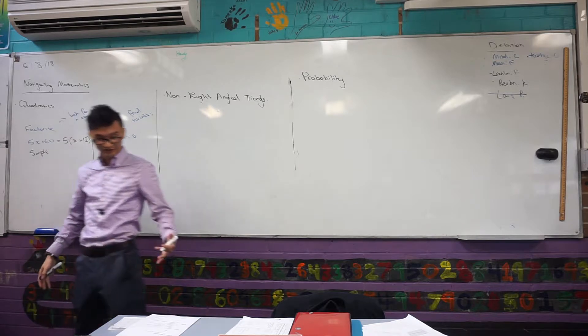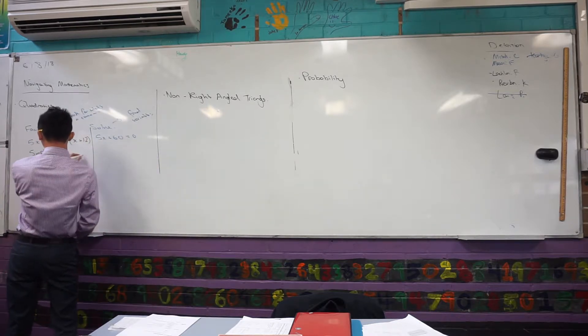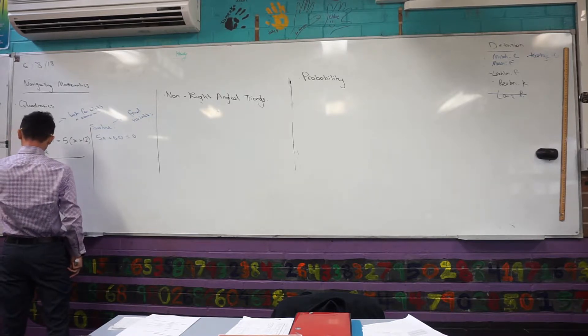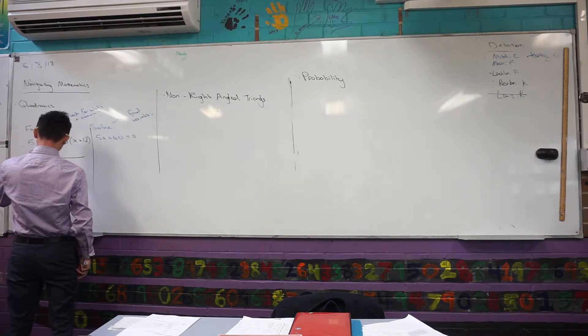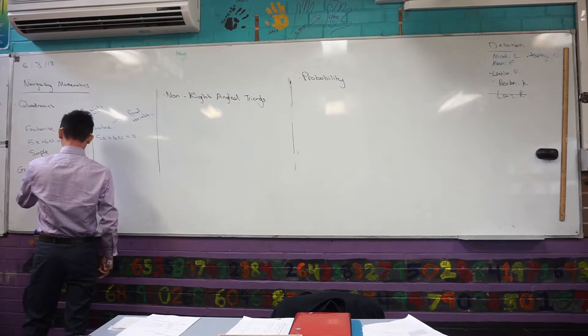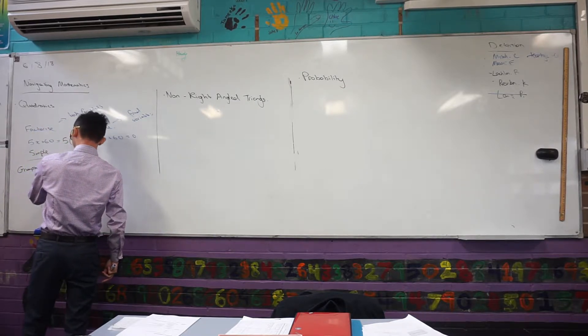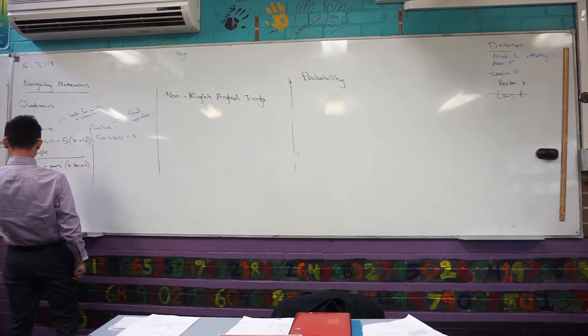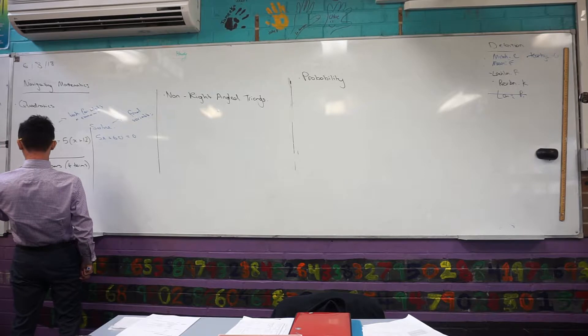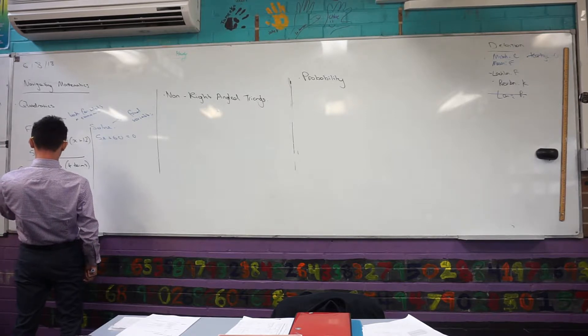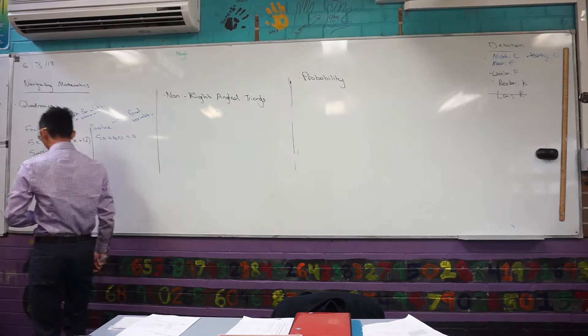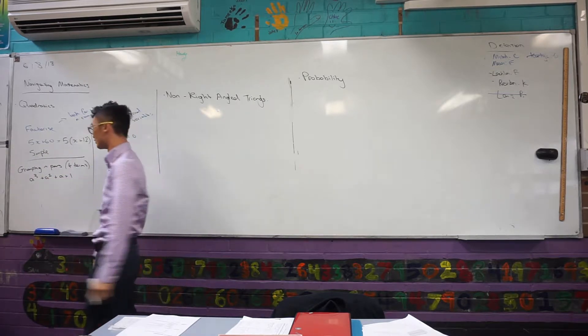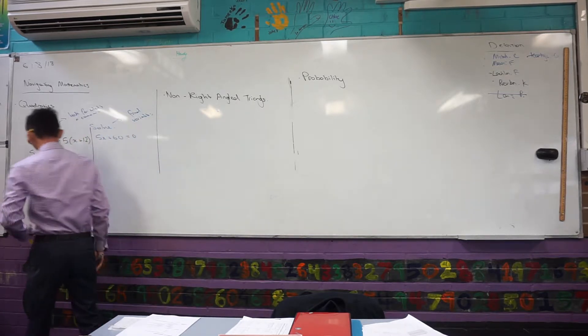There are a few different other methods of factorising. So that's the simple one. We also have grouping in pairs. That's when you have four terms. Grouping in pairs. That's when you have four terms. So I think it's actually an example on your sheet. It's a little bit confusing. I think it's a cubed plus a squared plus a plus one. When you look at this, there's nothing in common between all of them. But you see that there are four terms. So you want to think about the grouping in pairs method.